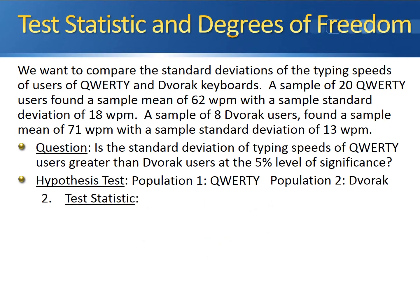The F-test for the ratio of two variances has an incredibly easy test statistic to calculate. The test statistic follows an F-distribution and is literally the ratio of the two sample variances — the sample variance for the QWERTY users divided by the sample variance for the Dvorak users. The sample variance for QWERTY users was 324 and for Dvorak users was 169, so 324 divided by 169 gives us a test statistic of 1.917.